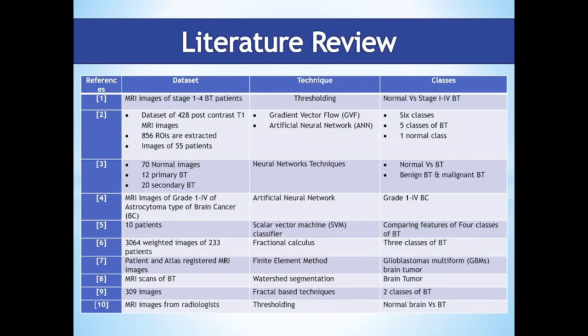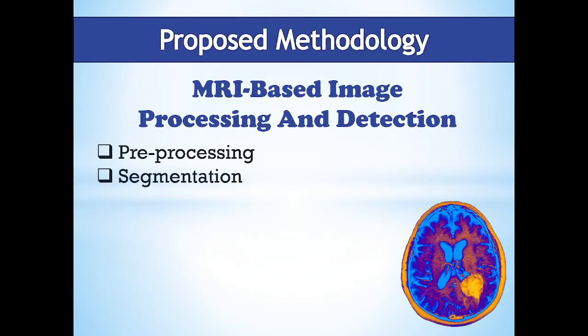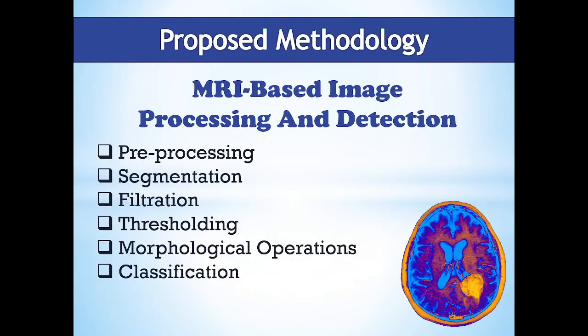For brain tumor detection, the literature review reveals that techniques including thresholding, gradient vector flow, artificial neural networks, neural network techniques, scalar vector machine, support vector machine classifier, fractional calculus, finite element method, watershed segmentation, and fractal-based techniques have been used. In this paper, we used MRI-based image processing for the detection of brain tumors because these images do not ionize radiation as in X-rays, and they give a clear picture of the inner parts of the brain which cannot be seen with the naked eye.